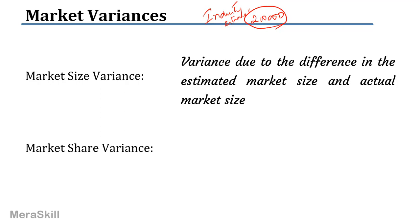The industry estimate was 200,000 — not my company's estimate, the industry estimate. The actual industry sales may be more or less. Suppose it becomes 250,000. It means part of my favorable variance, if I have one, is because the industry has grown. Conversely, if it comes down to 180,000, the industry is shrinking, and my unfavorable quantity variance is partly due to that overall industry effect.